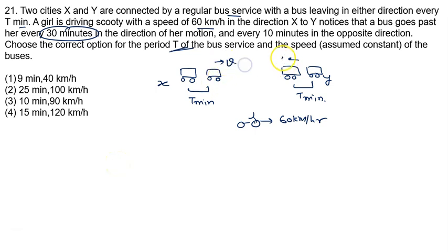Let's say the speed of the buses is given to us v. Now look carefully. Buses are traveling from X to Y. Over the time situation, what is the distance between two buses? The distance between the two buses is given to us v times T by 60 hours. This is the distance between the two buses.